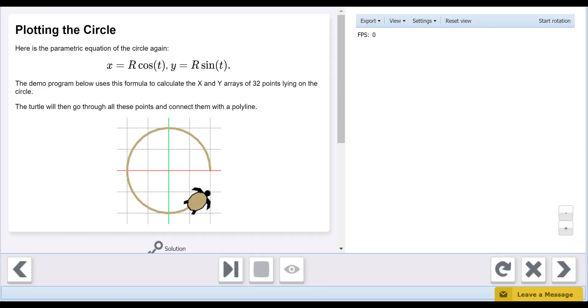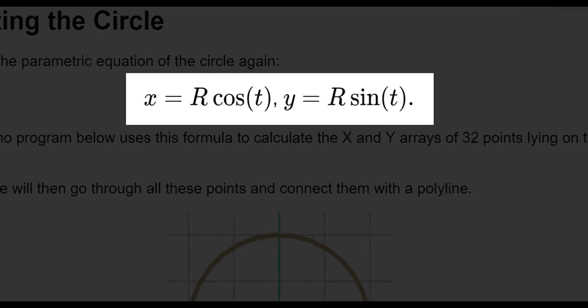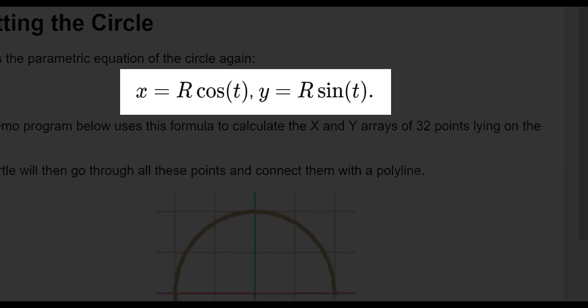Now, for some basic trigonometry. To get our X value, we multiply the radius by the cosine of t. For the Y value, we multiply the radius by the sine of t.